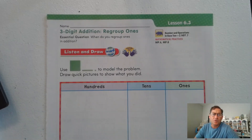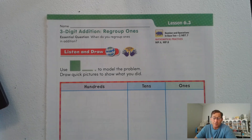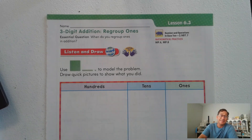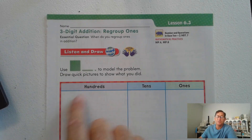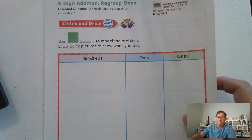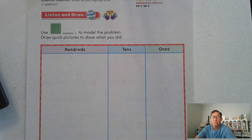Hello everybody. In today's lesson we're going to work on three-digit addition with regrouping ones. The essential question you should be able to explain is: when do you regroup ones in addition? You should already be able to explain that because we have already worked with regrouping when we were adding tens in our previous chapter. Listen to the following problem and use quick pictures to show what you did to solve it.